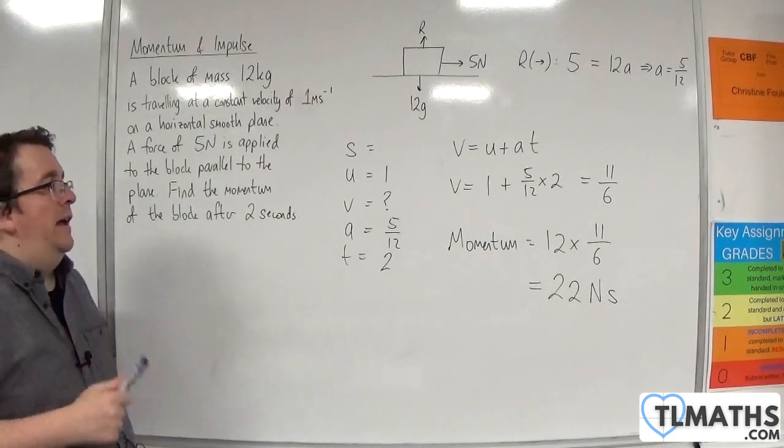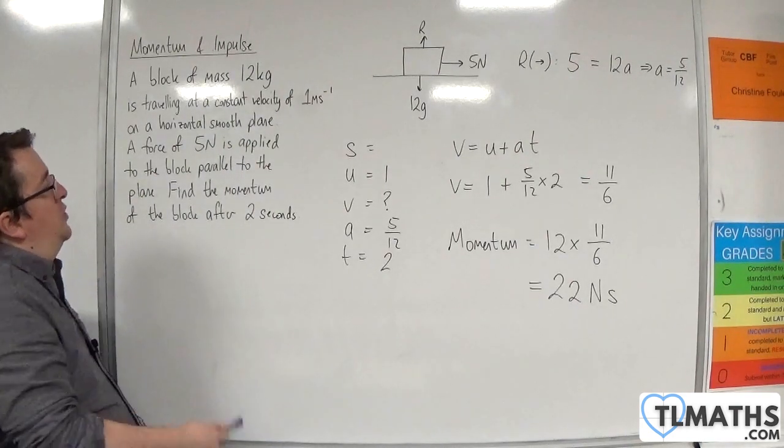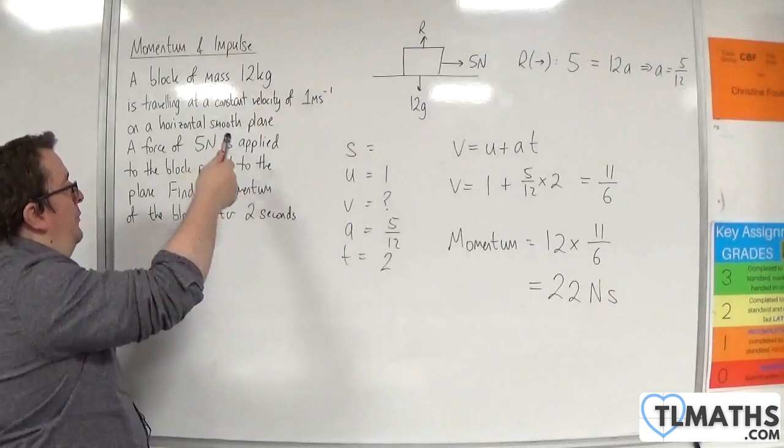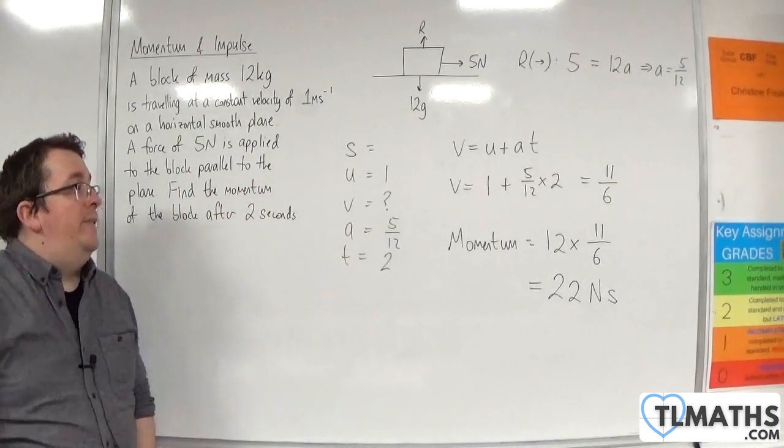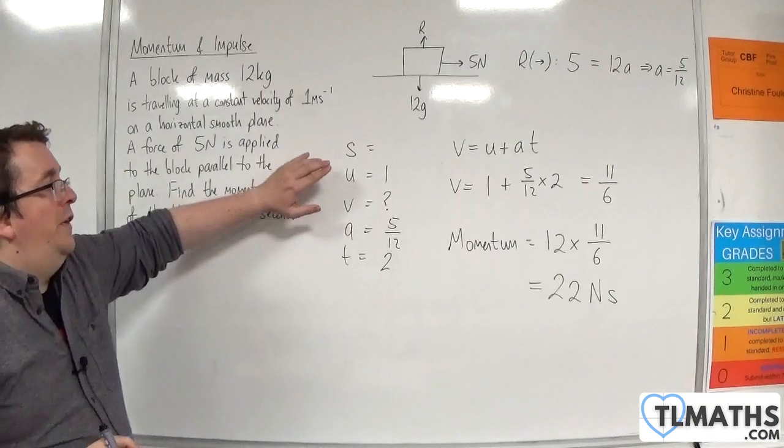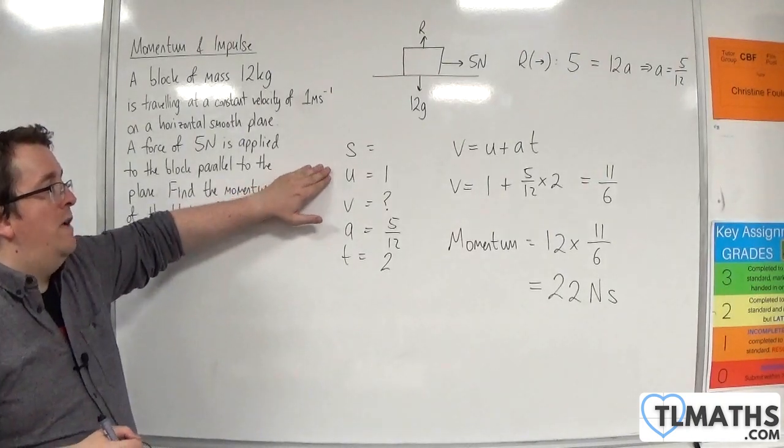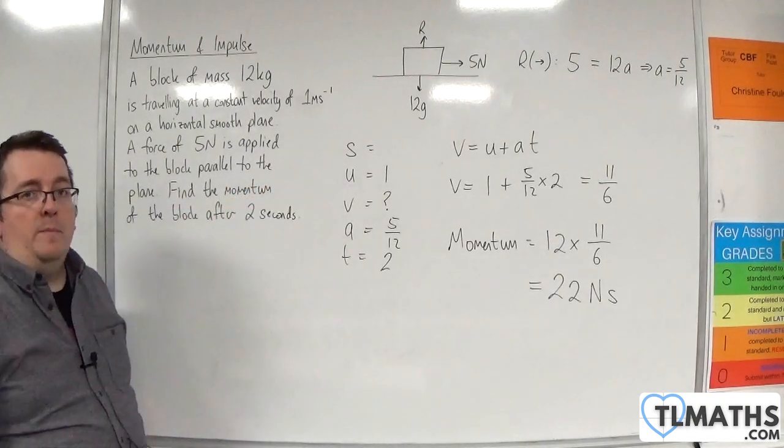So you can see that in this case the momentum is not just calculated by multiplying the force by the time. And that's because the only thing that I changed was that the block is no longer at rest. It has an initial velocity of 1 meter per second.